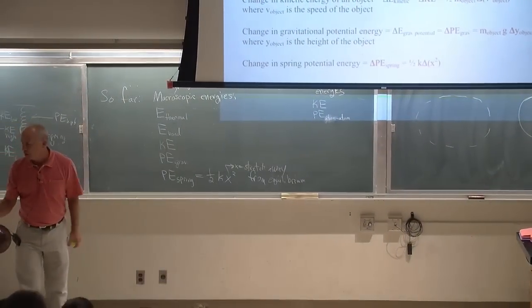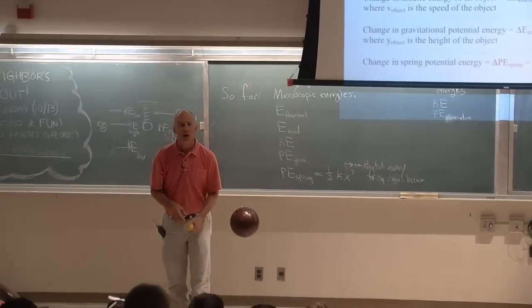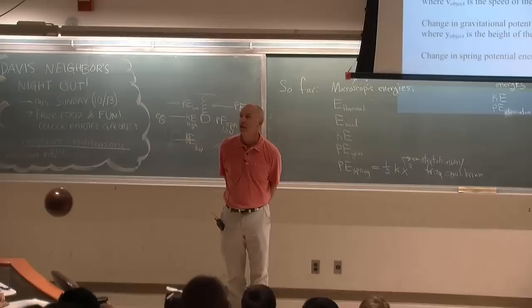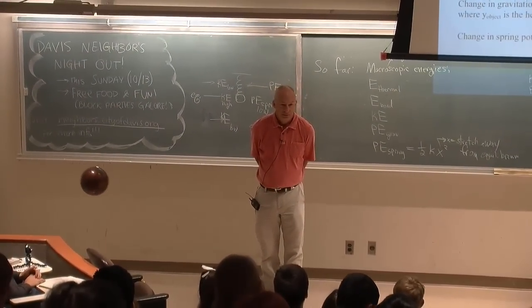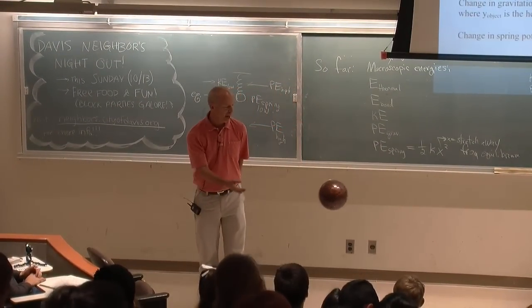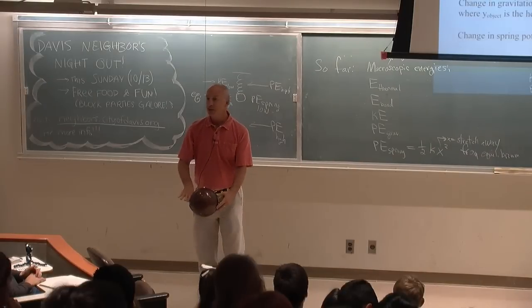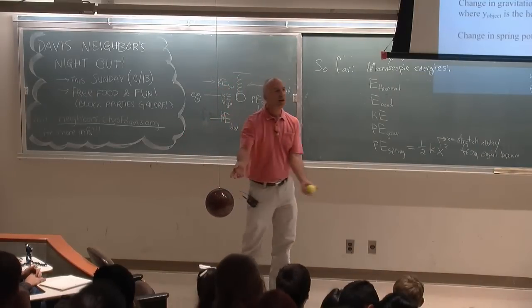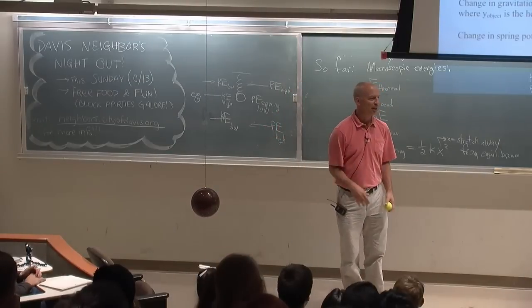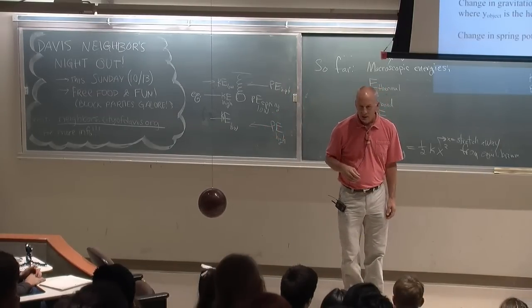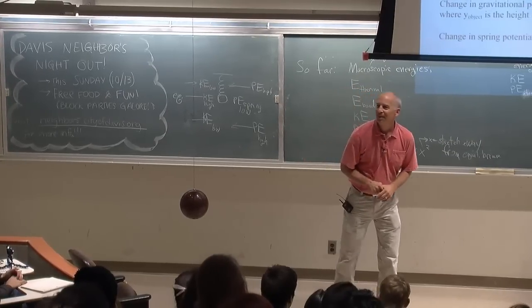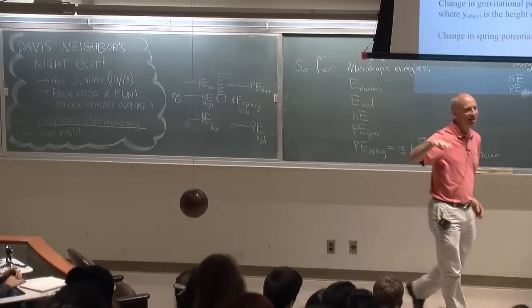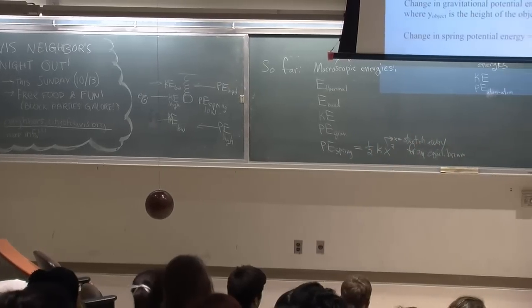What would you choose for the zero height for gravitational potential energy? The bottom of the bowling ball swing is the lowest height, so you might call that zero for gravitational potential energy. What about the ball? It really feels like you ought to use the floor. Feels like the floor would be the better place to measure the zero from.